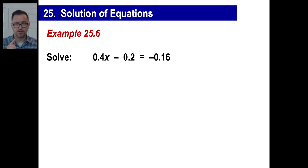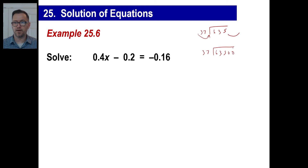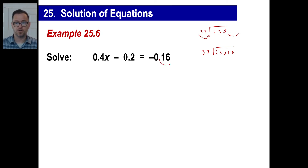We're going to transform the decimal equation into integers. Just like in division you move the decimal point over to make whole numbers, here you move all the decimals over the same number of times. The most you need to move to get rid of all the decimals is twice. So move each term's decimal over two places, adding extra zeros as needed.